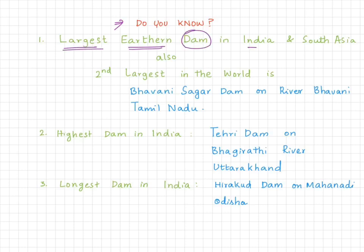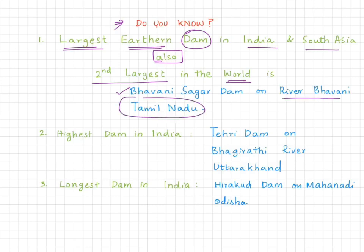There are many types of dam constructions. My first question: what is the largest earthen dam in India and South Asia, which is also the second largest earthen dam in the world? The answer is Bhavani Sagar Dam. My next question: name the highest dam in India. The answer is the Tehri Dam.